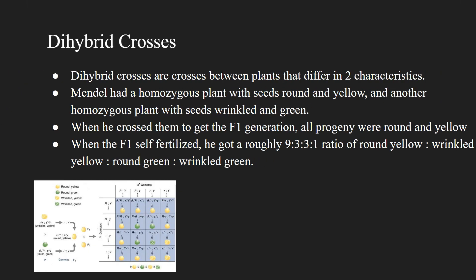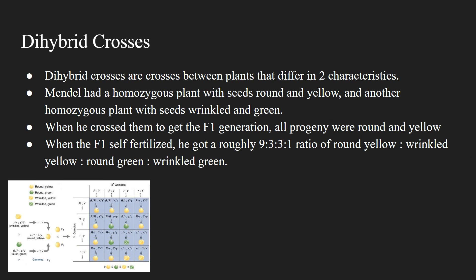Now let's talk about Mendel's dihybrid crosses. Dihybrid crosses are crosses between plants that differ in two characteristics, in contrast to monohybrid crosses, which differ in only one characteristic. Mendel had a homozygous plant with seeds round and yellow, and another homozygous plant with seeds wrinkled and green. He again confirmed these plants were pure by self-fertilizing them for two generations. When Mendel crossed these two parents to get the F1 generation, all progeny were round and yellow. But when the F1 self-fertilized, he got a roughly 9 to 3 to 3 to 1 ratio of round yellow to wrinkled yellow to round green to wrinkled green.